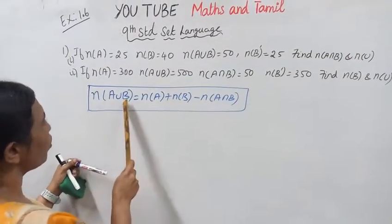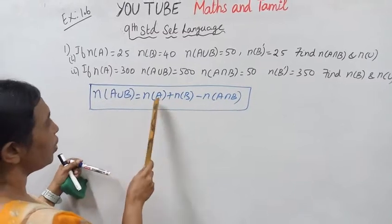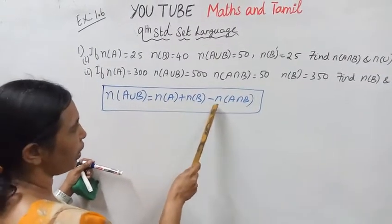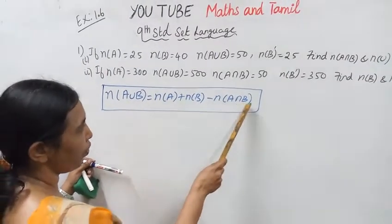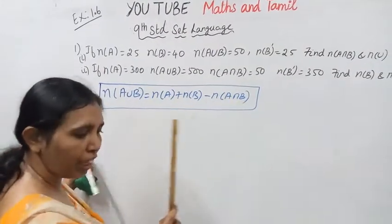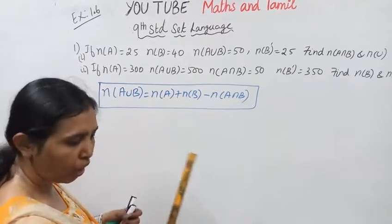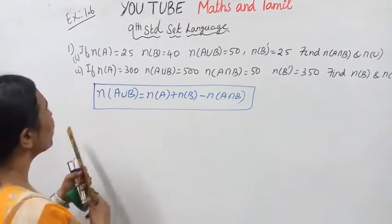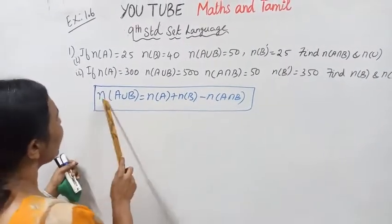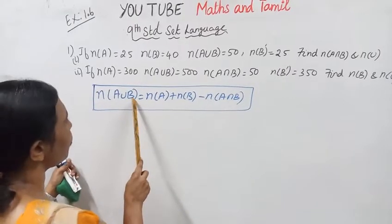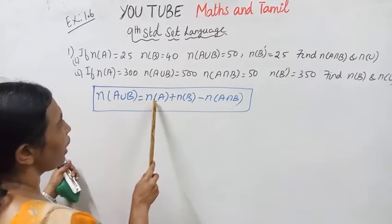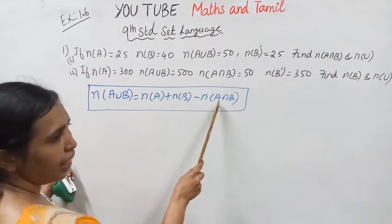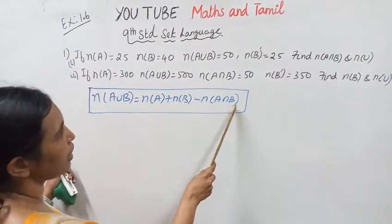N of A union B equal to N of A plus N of B minus N of A intersection B. This is the direct formula.